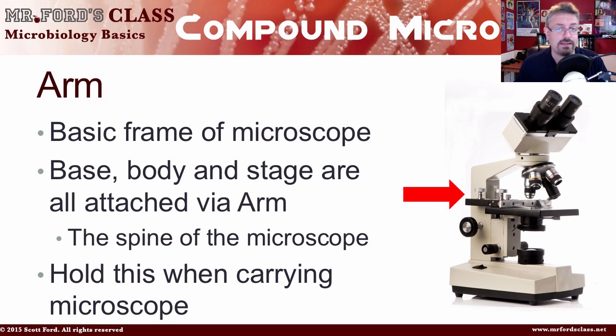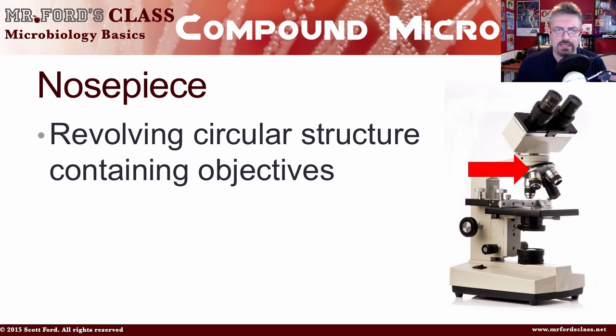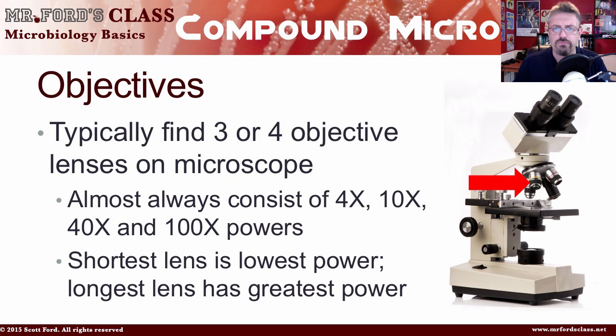If you're carrying the microscope, you need to hold on to the arm as well as the base. The next component is the nosepiece, which contains the objectives — it's the part you spin to change objectives. The objectives are the lenses closest to the specimen. Usually there are three to four objective lenses: 4x, 10x, 40x, and 100x power. The shortest lens is the lowest power, while the longest lens has the greatest power.